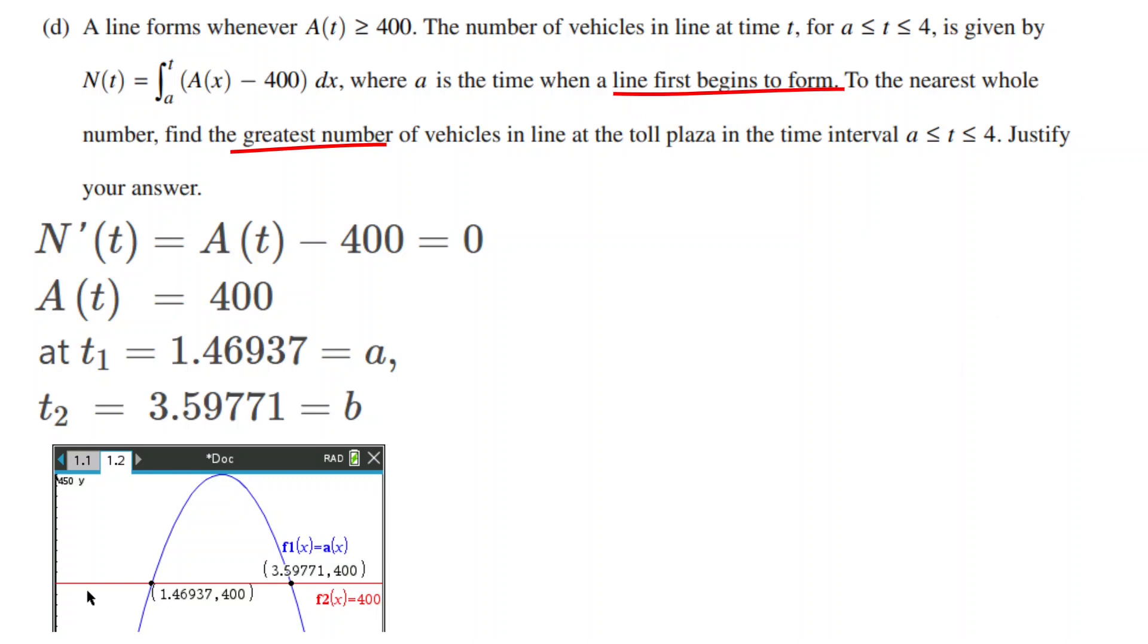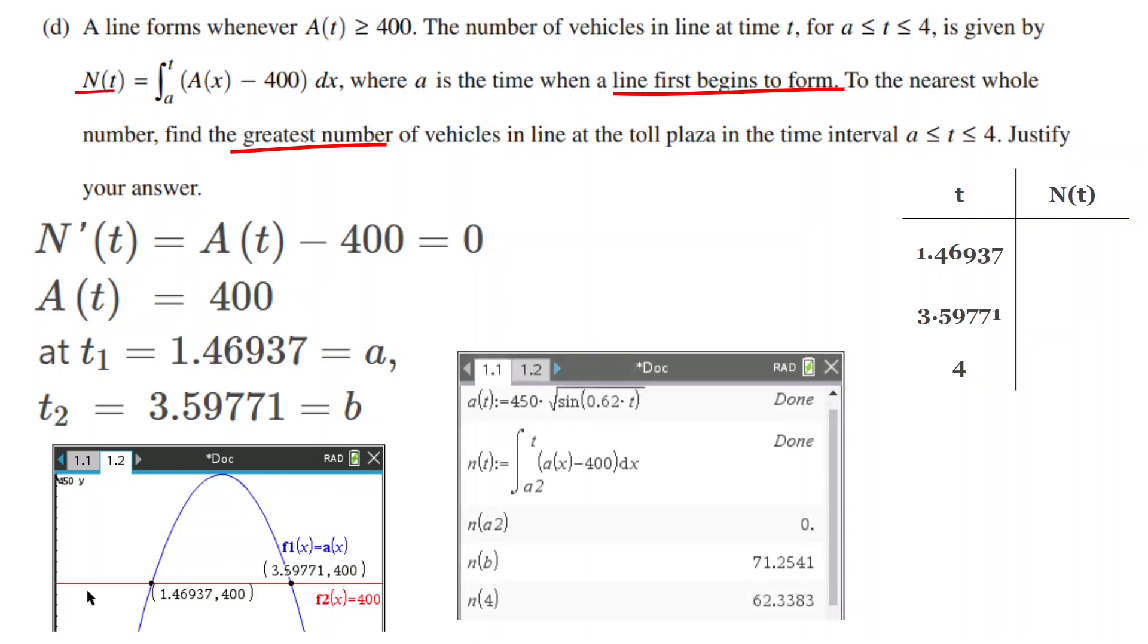Lastly, we make a table with 3 potential times on the left and N(t), the number of vehicles, on the right. We know that a is 1.46937, so we can find all the values of N(t) using a calculator. We see that 71 is the absolute maximum and then we can write out our statement.